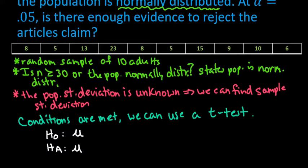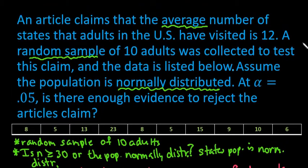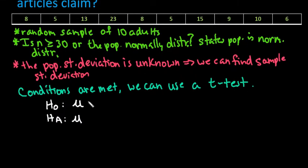Mu is what we use for our null and alternative when we're dealing with the mean. Anytime we're testing the mean, we say that it is 12, so our claim is that mu equals 12. Since that is a statement of equality, our claim is about the null hypothesis. The alternative would be that mu does not equal 12.